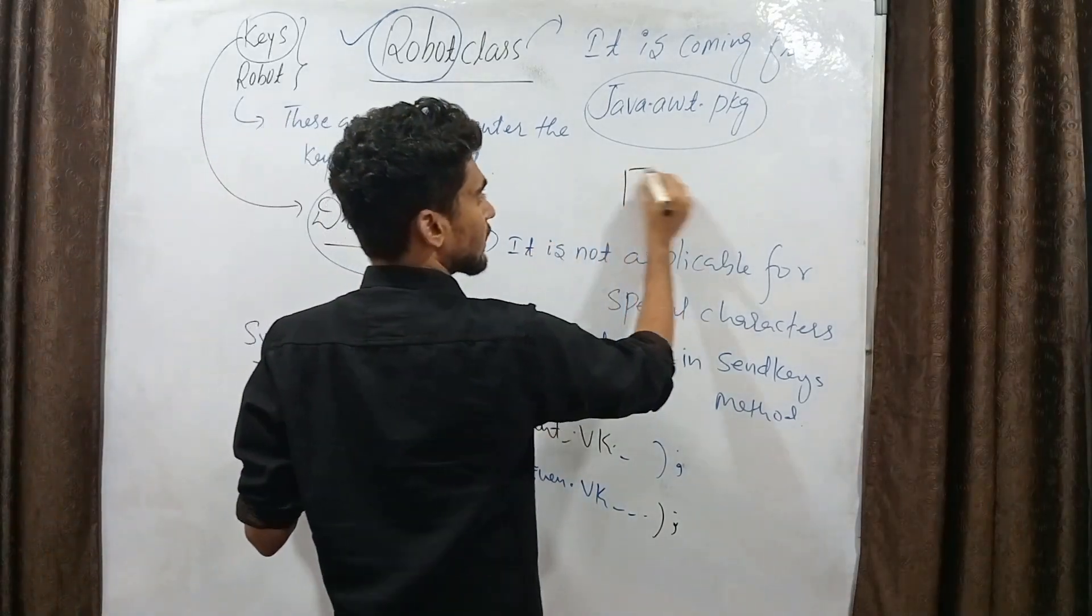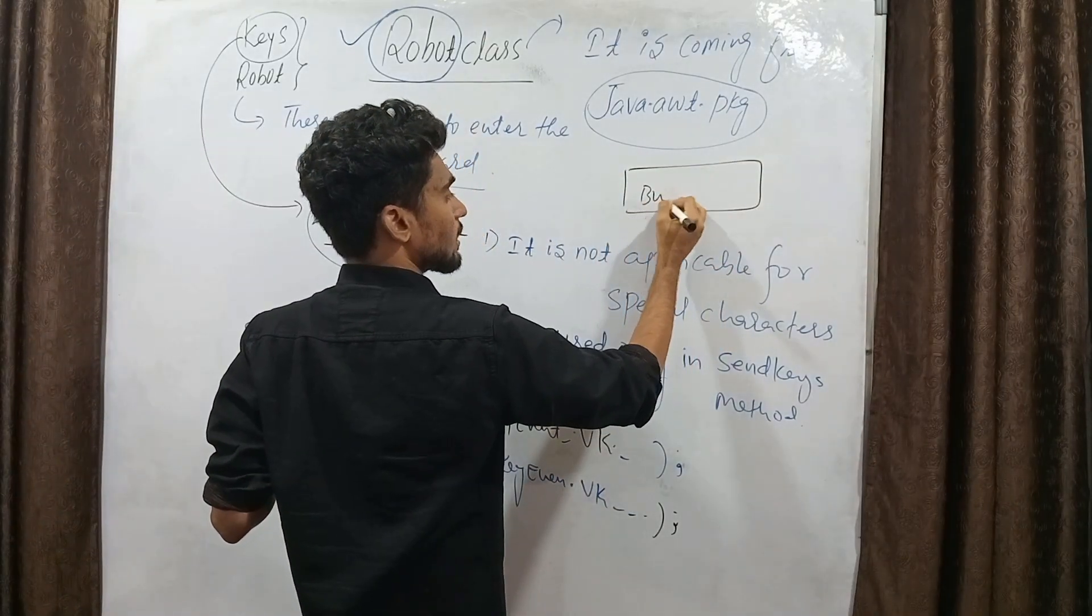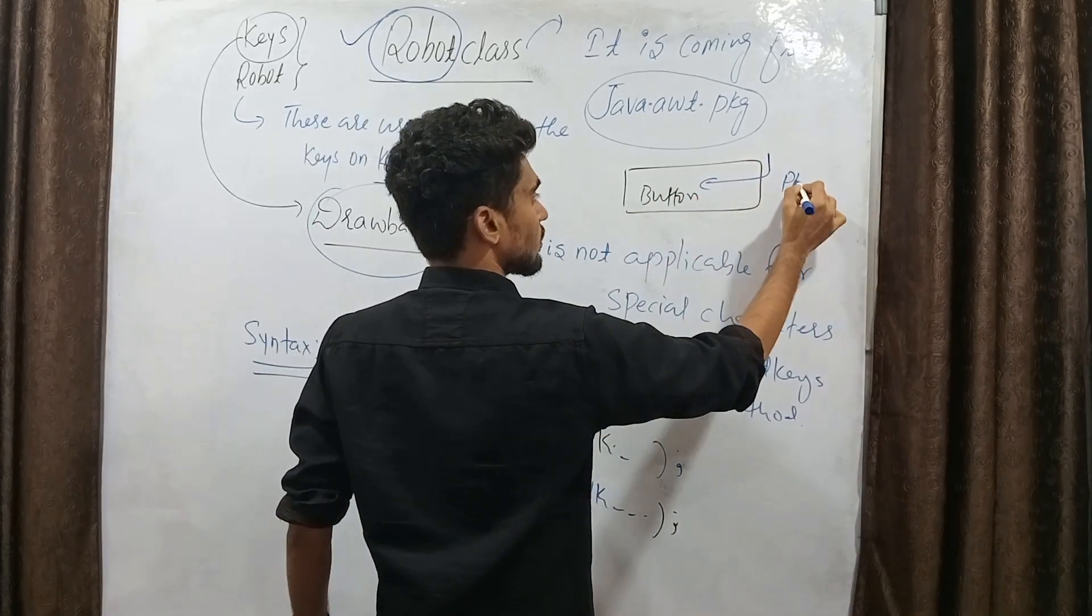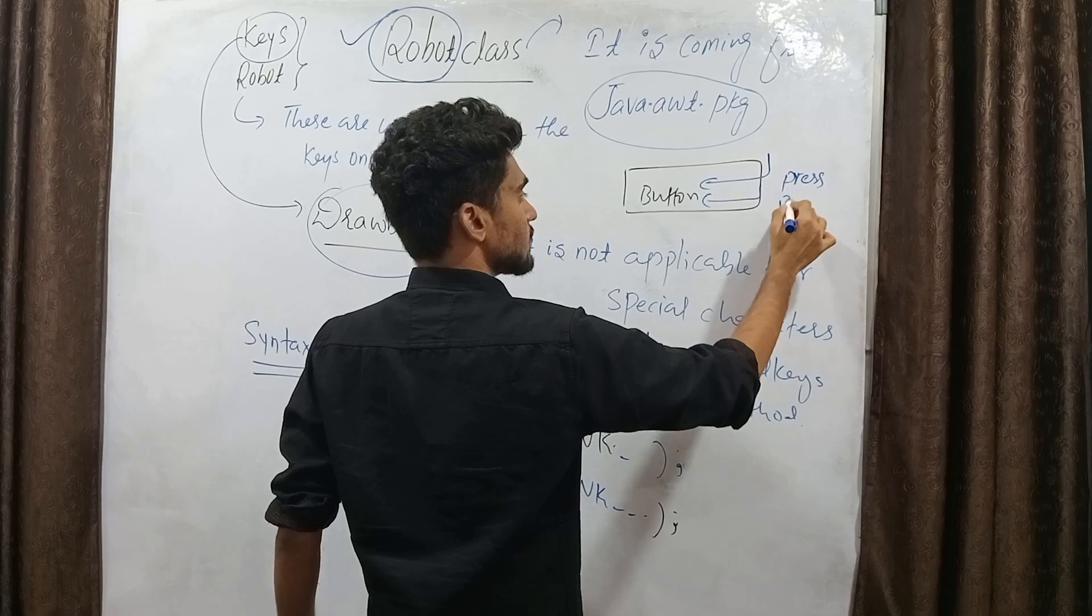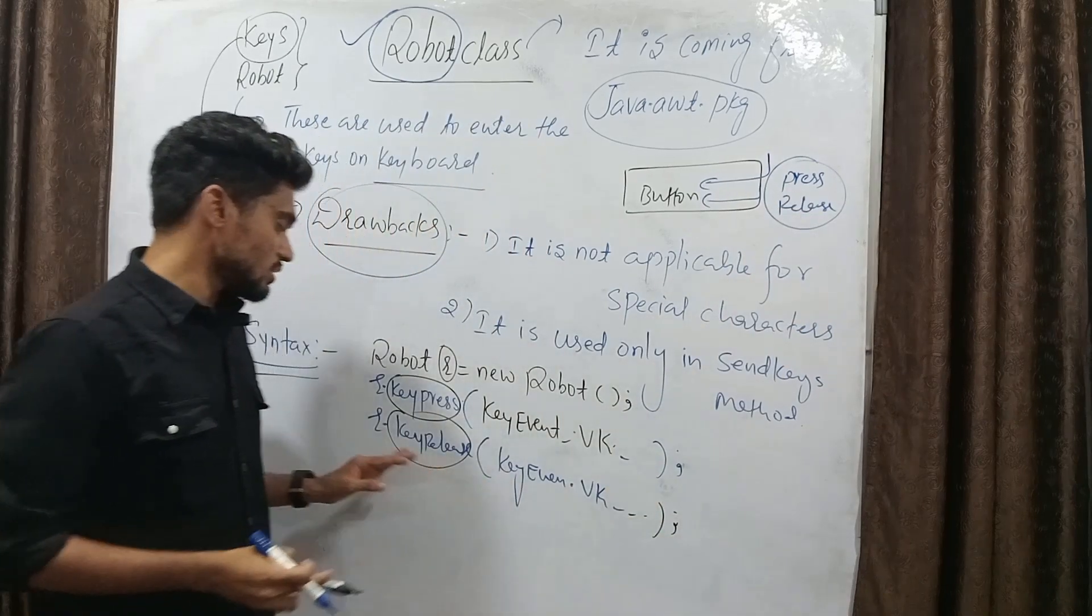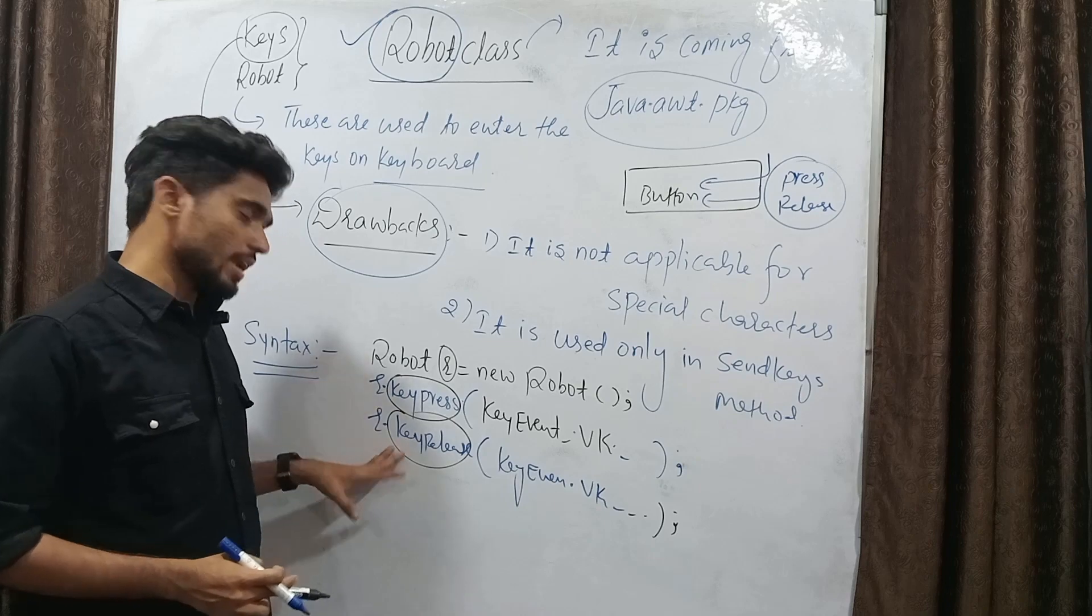If you want to perform one single activity, for example, this is button. First, you have to press it and you have to release it. So, that we have these two methods. One is key release and key press.